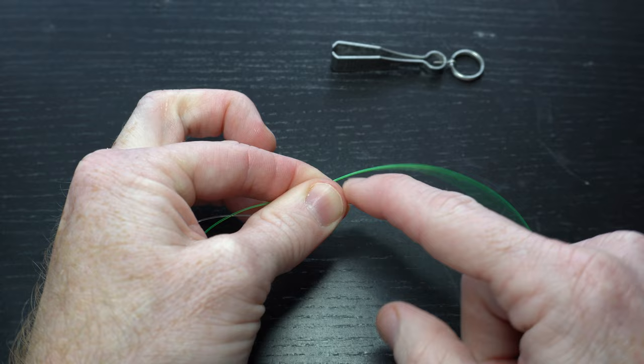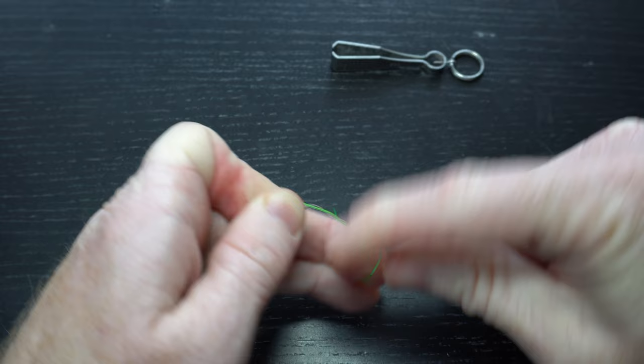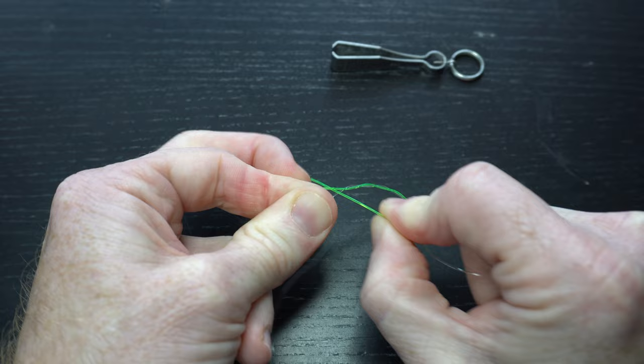Start wrapping the leader line around the tippet, making note of which direction you're winding. Here I will be making four wraps because the line is thick, but usually I will make five. Once your wraps are made, then come back down through the space made between your pinched fingers.